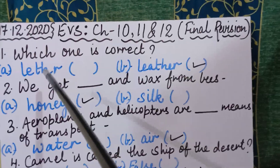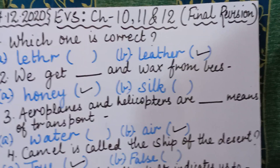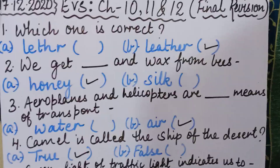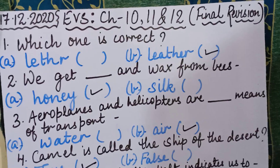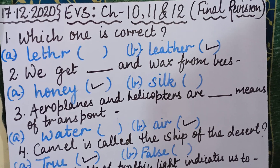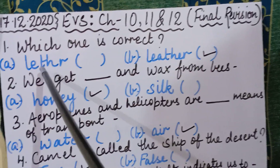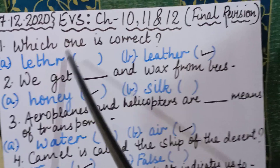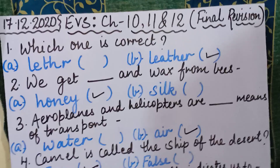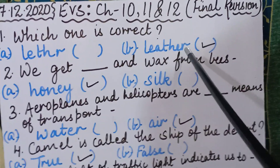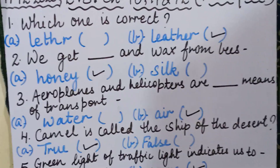Coming to the first question: which one is correct? I have given two spellings — one is correct and one is incorrect. You have to figure out the correct spelling. The spelling is of 'leather.' Part A is L-E-T-H-R and Part B is L-E-A-T-H-E-R. The correct answer is Part B: L-E-A-T-H-E-R, leather. We will put a tick in front of this.